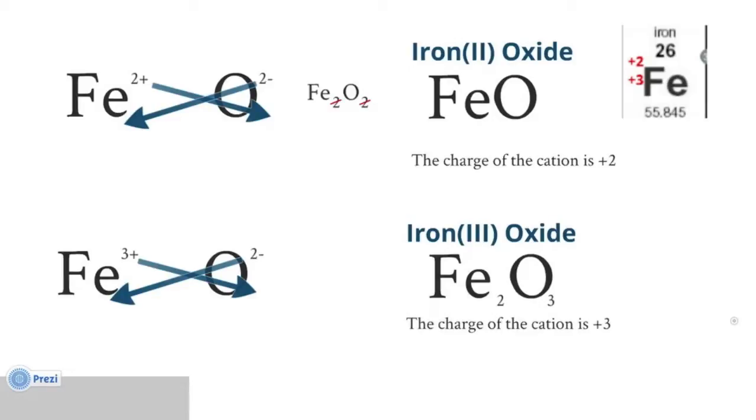So you have a cation which can form more than one kind of charge. You need to determine what charge it has when you say the name. If it has a charge of plus 2, then you need to say iron 2 oxide. If it has a charge of plus 3, you need to say iron 3 oxide.